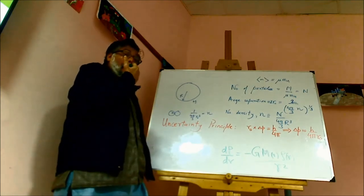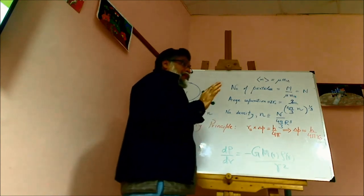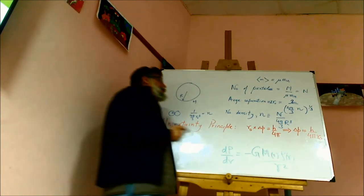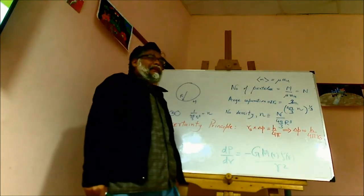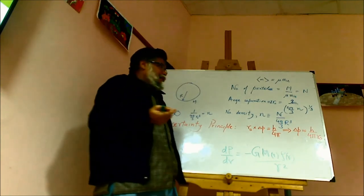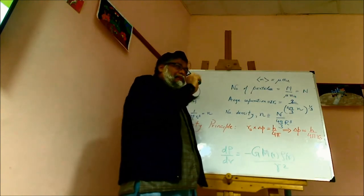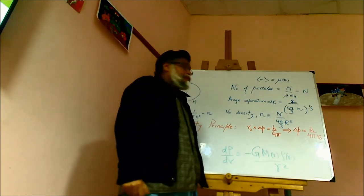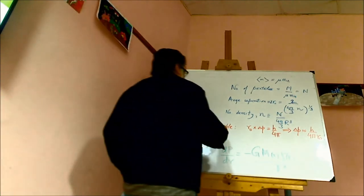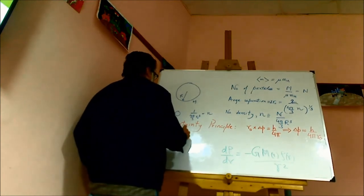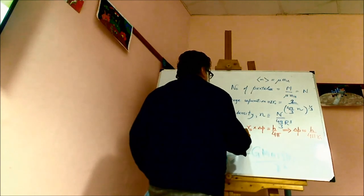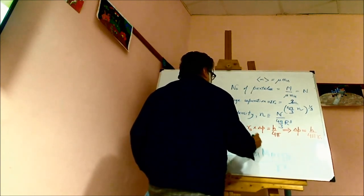Now, supposing the uncertainty is not so large as to make the particles move relativistically — if they are non-relativistic, then given the uncertainty in momentum, the uncertainty in speed follows from p = mv. So in non-relativistic physics, the uncertainty in speed is delta_v = h/(4π * m * R0).